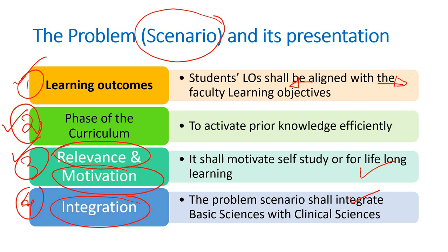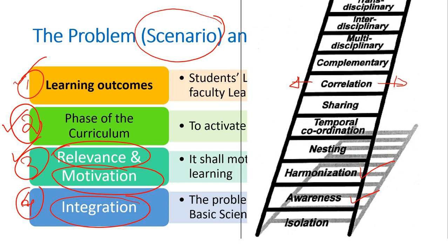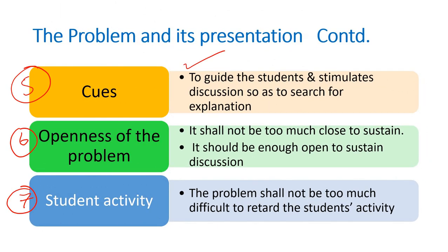Integration of basic sciences with clinical sciences — or within the same subjects such as physiology, pharmacology, microbiology, and biochemistry — is key to a good weekly plan. You can plan correlation at the level of your timetable or weekly plan. There should be sufficient course content so students can identify their learning points, and the openness of the scenario should be neither too closed nor too broad, so students can stay focused on the targeted learning objective.